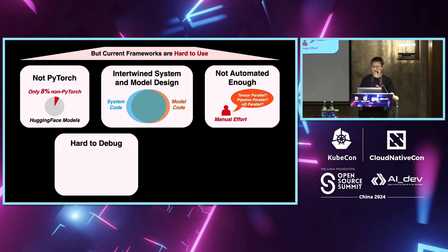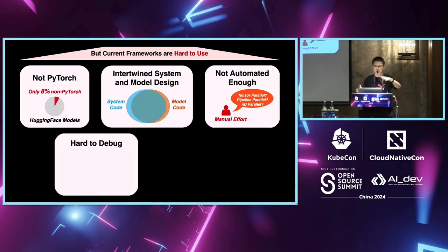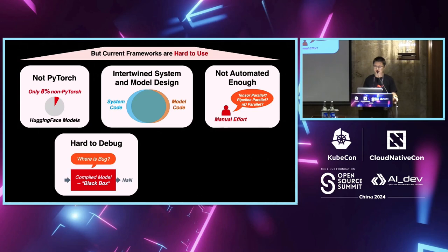The fourth challenge is that it is very hard to debug — a direct consequence of the intertwined system and model design. We had the experience of 10 people spending three weeks just finding one bug in Megatron's linear layer, which was truly painful. For compiled execution frameworks like JAX, things are even worse because you cannot break into lines of code and print out information. If you have a NaN bug, you don't know what's going on.